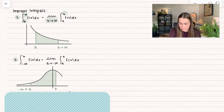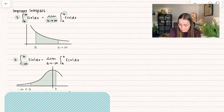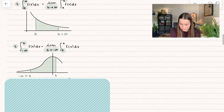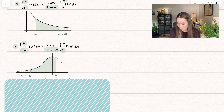The second version is where we have a normal upper bound — just a number — but our lower bound is going to negative infinity. We rewrite this as a limit as a goes to negative infinity and replace our lower bound with a. An example of this visually is where we have that upper bound of b, but on the left side our a is going all the way to negative infinity, and so we're accounting for that entire area.